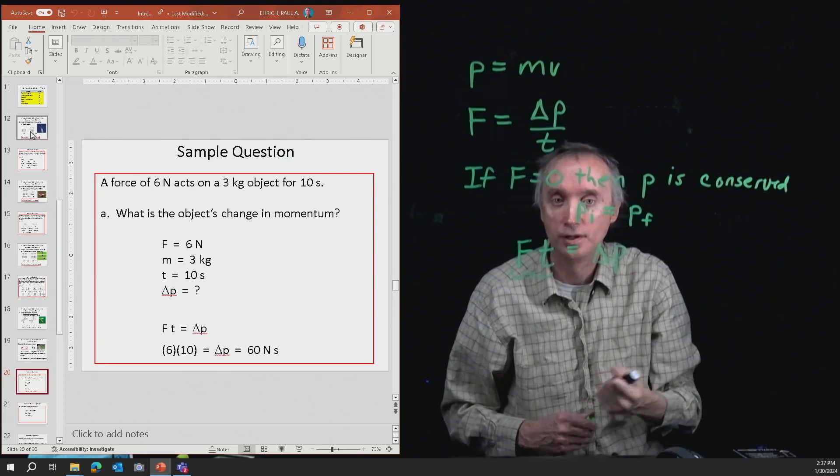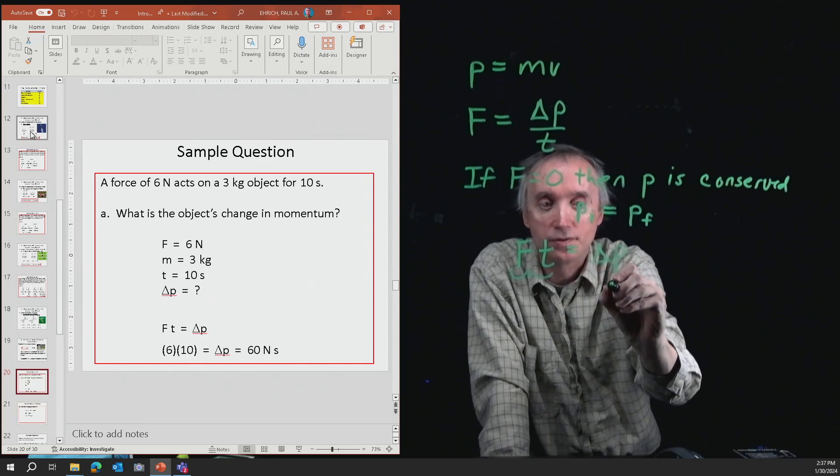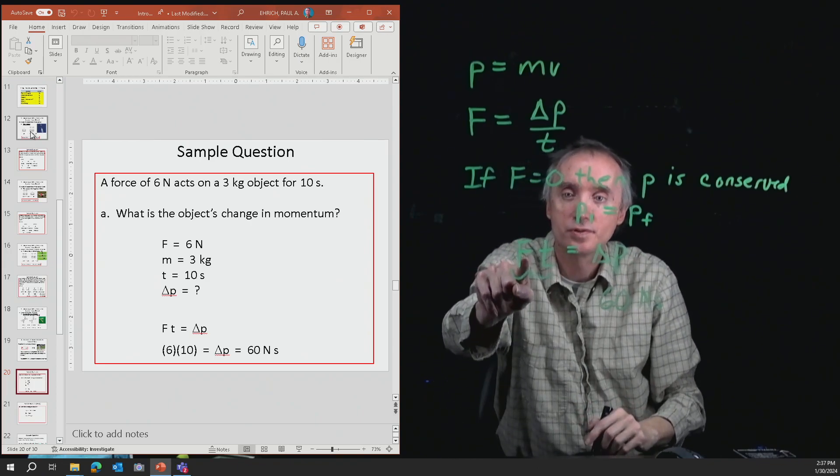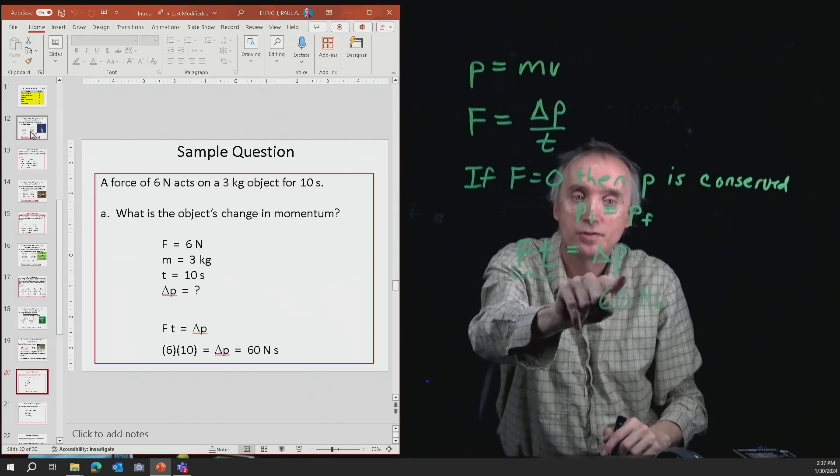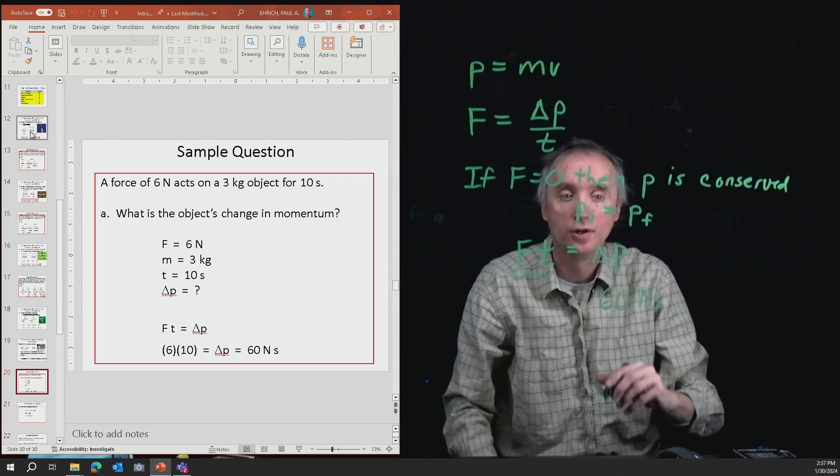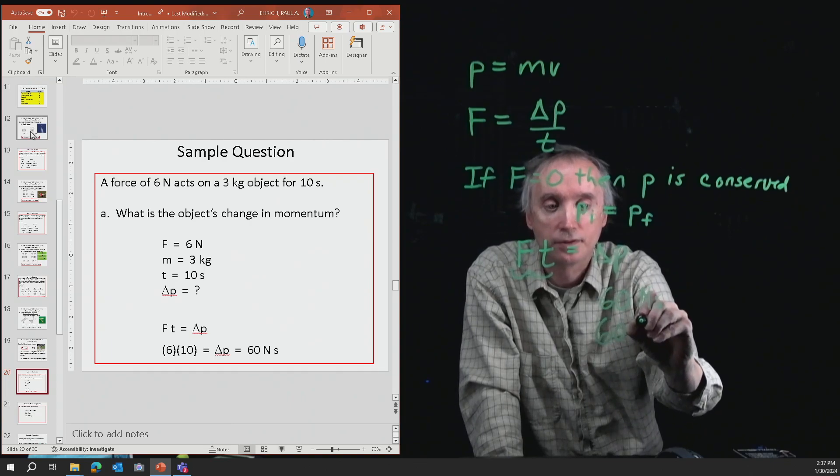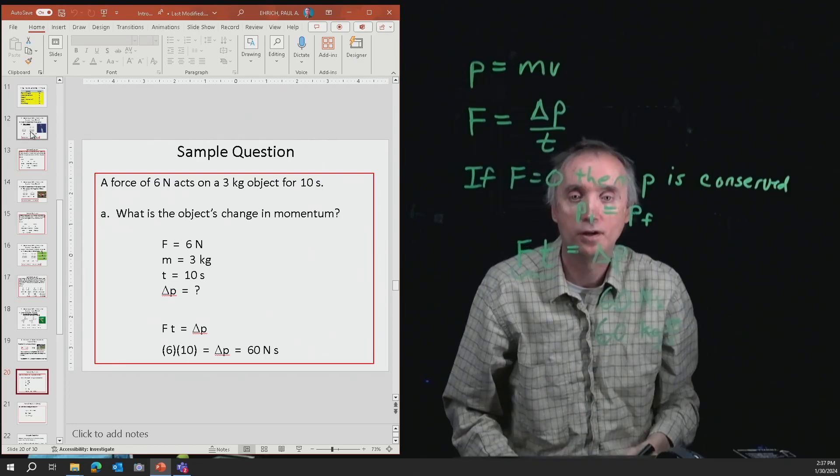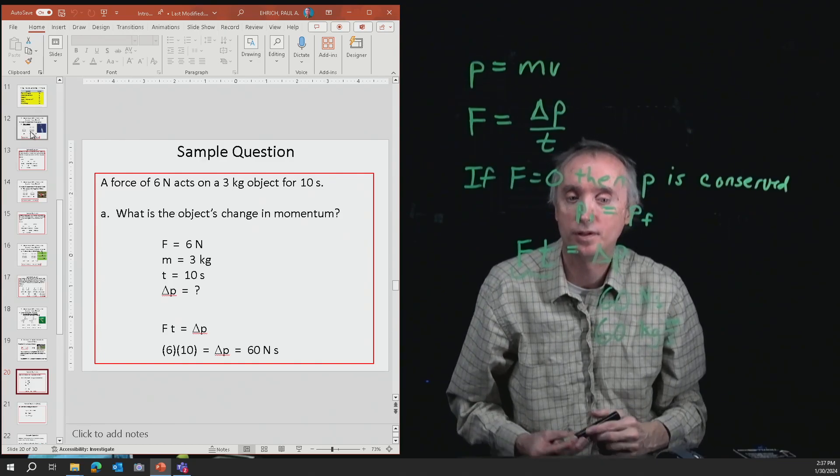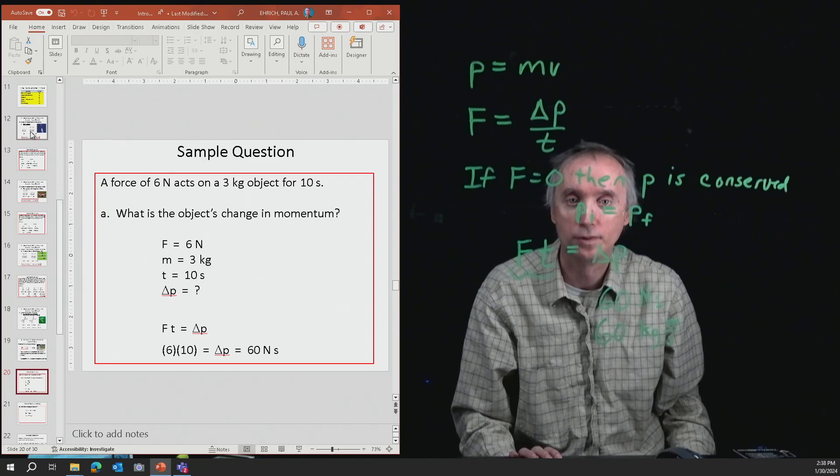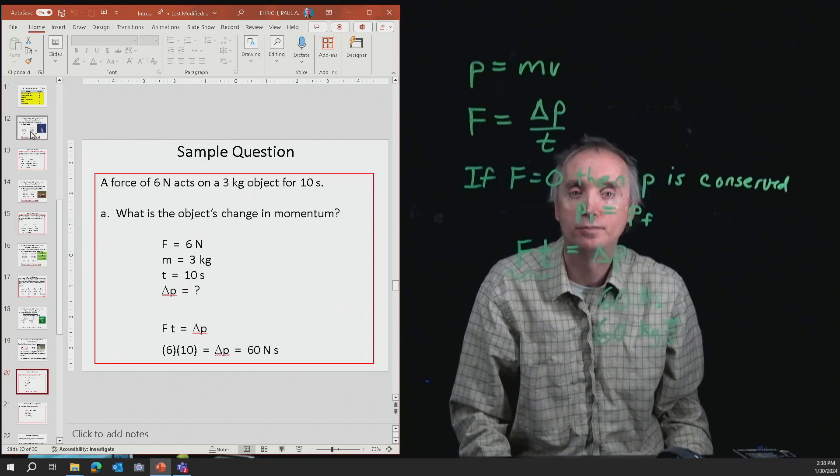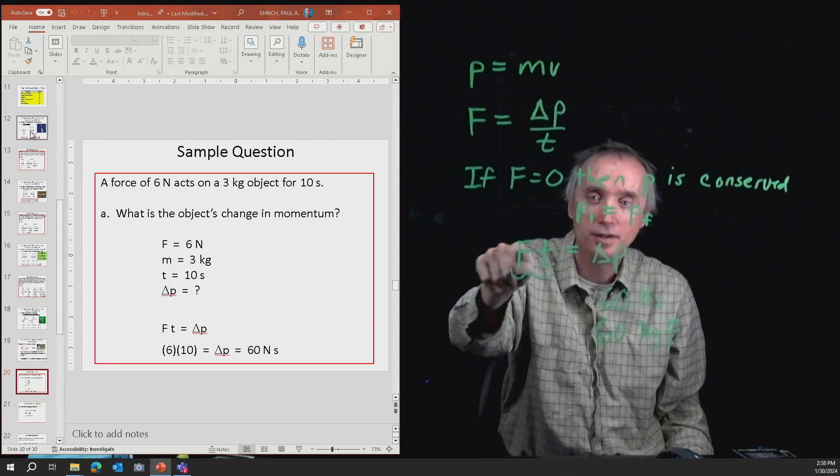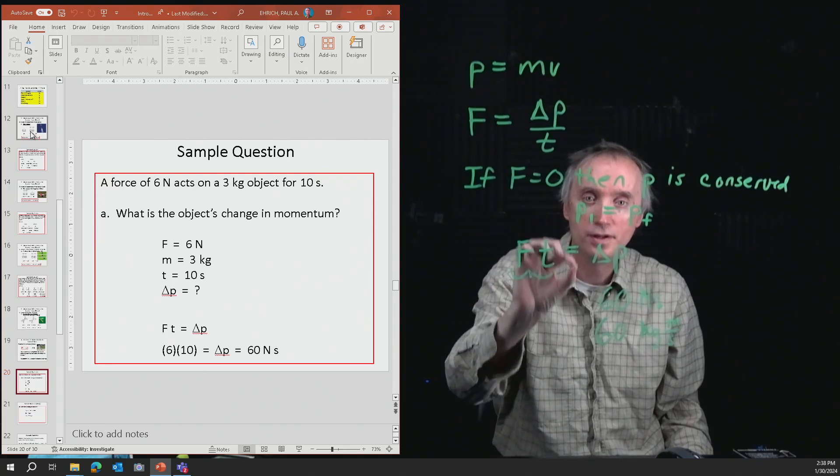I said it was 60 newton seconds because this was in newtons and this was in seconds, so the change in momentum was newton seconds. But we also could have said this was 60 kilograms meters per second. Either of these two is perfectly okay on the exam—they're both correct metric units. Did you notice that this particular problem did not use the three kilograms? M is not in this equation, so you did not use the three kilograms.